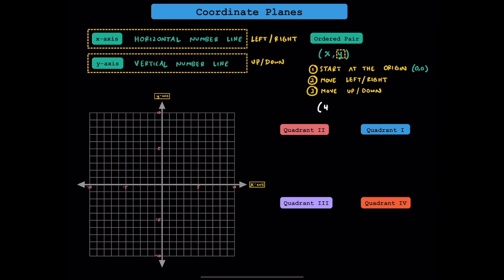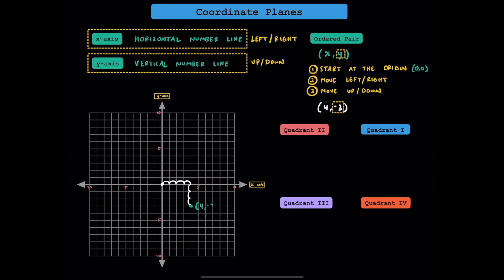As a quick example, if you're trying to plot the point (4, -3), here's how we would do it. First, identify where the origin is at (0, 0). Since x's value is positive 4, we're going to move to the right 4 units: 1, 2, 3, and 4. And in step three, since the y value is equal to negative 3, we're going to move down 3 units: 1, 2, and 3. This point right here represents the location (4, -3).